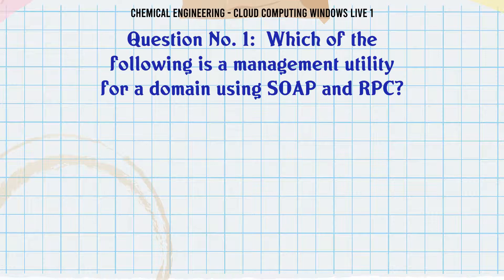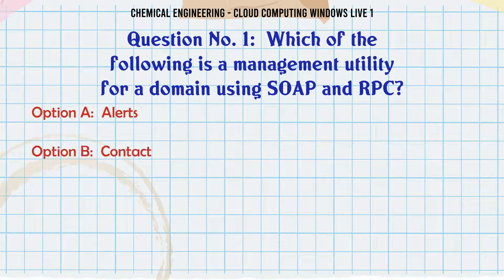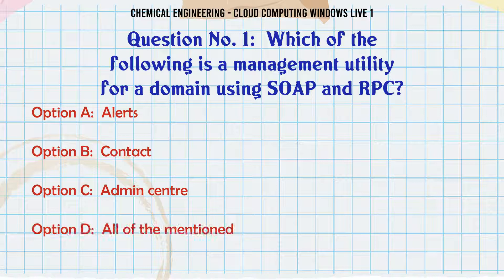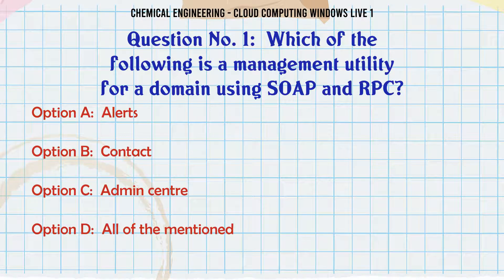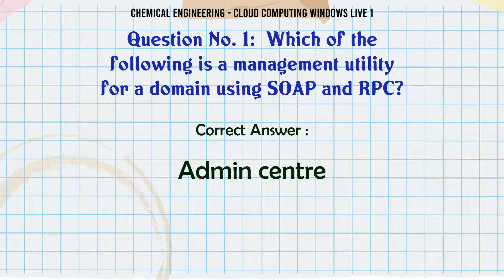Which of the following is a management utility for a domain using SOAP and RPC? A. Alerts. B. Contact. C. Admin Center. D. All of the mentioned. The correct answer is Admin Center.